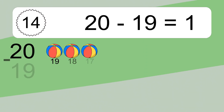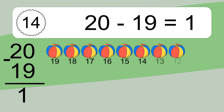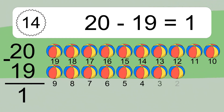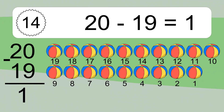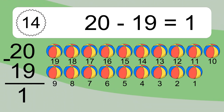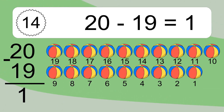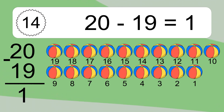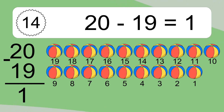20 minus 19 equals 1. Let's count it: 19, 18, 17, 16, 15, 14, 13, 12, 11, 10, 9, 8, 7, 6, 5, 4, 3, 2, 1.